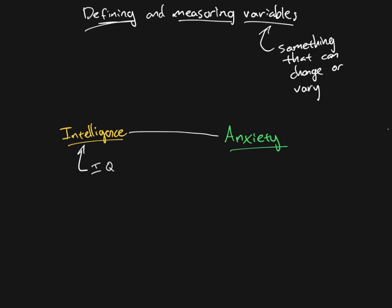Because obviously, if we want to be measuring something in one way but we choose the incorrect measure, then we might get an answer. We might find that there's no relationship between intelligence and anxiety, where if we had used a different measure of intelligence, we might have found a relationship.